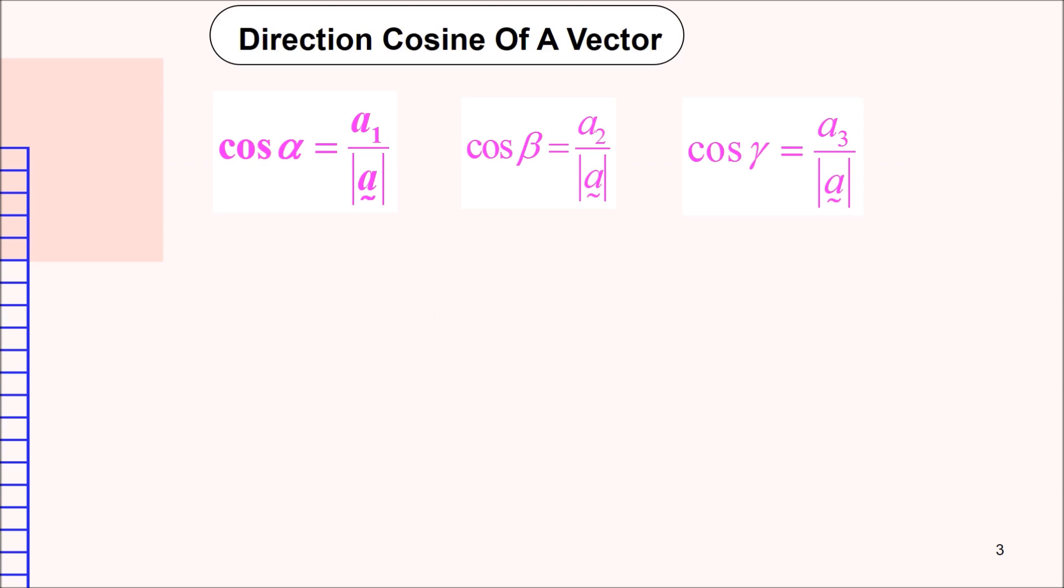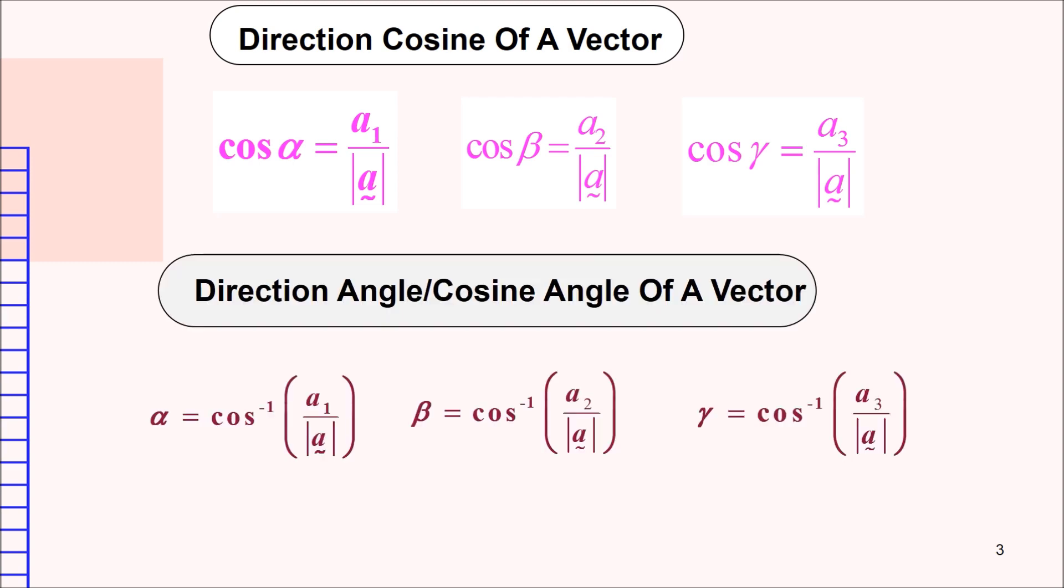Lastly, we have already learned about the direction cosine of a vector. Cos alpha is equal to the component a1 divided by magnitude a. Cos beta is equal to component a2 divided by magnitude a. And cos gamma is equal to component a3 divided by magnitude a. Finally, if we are looking for the direction angle or the cosine angle of a vector, we just need to take alpha equals to cos inverse of component a1 divided by magnitude a for angle beta that is equal to cos inverse of a2 over magnitude a. And for the angle of gamma, that is equal to cos inverse of a3 divided by magnitude a.